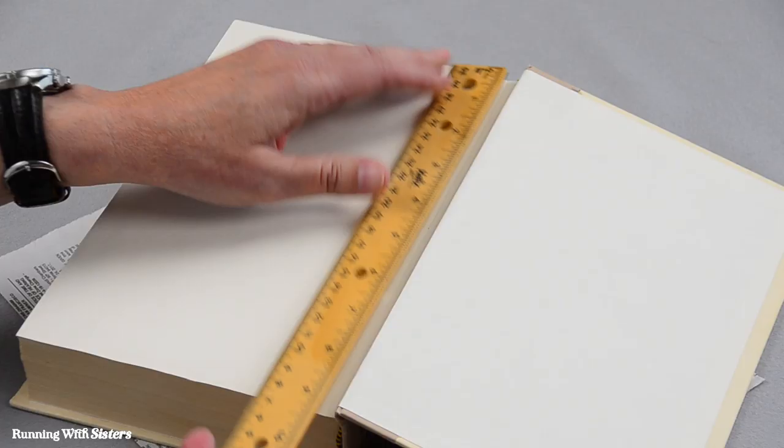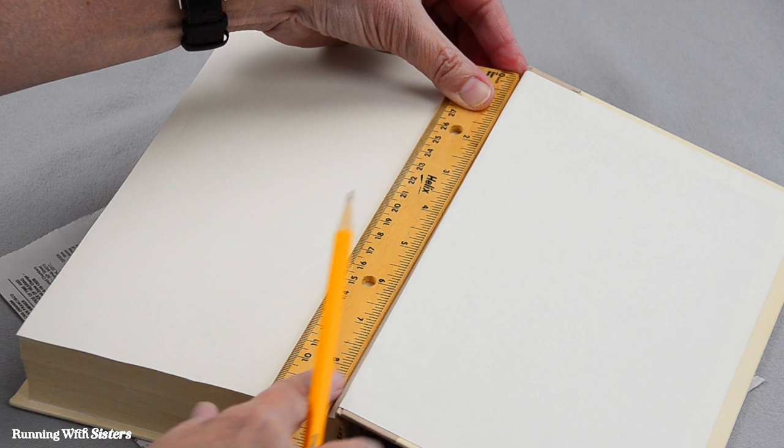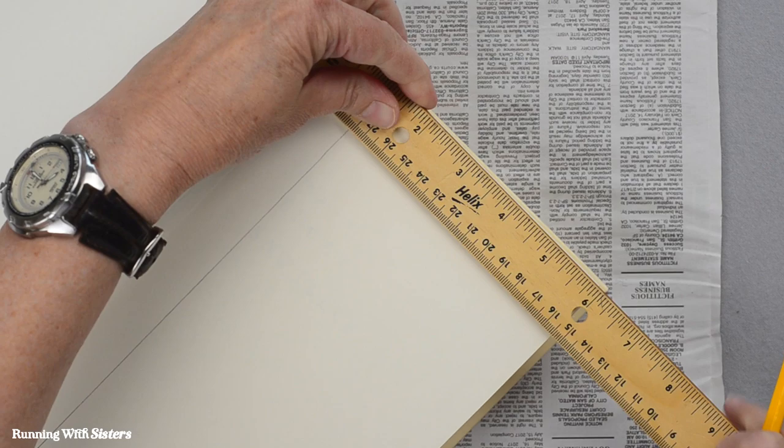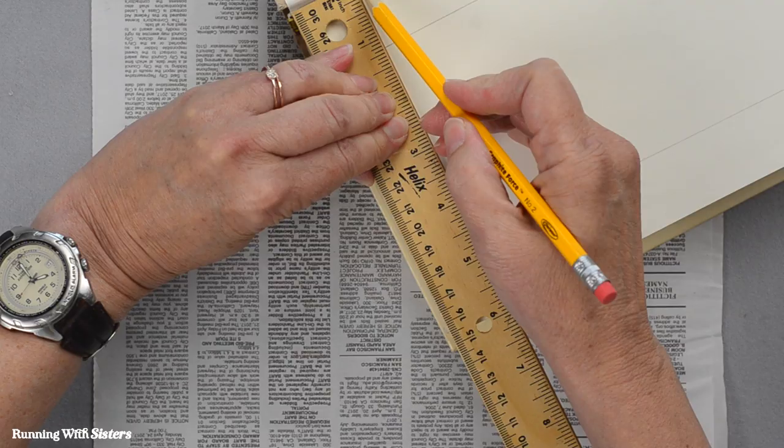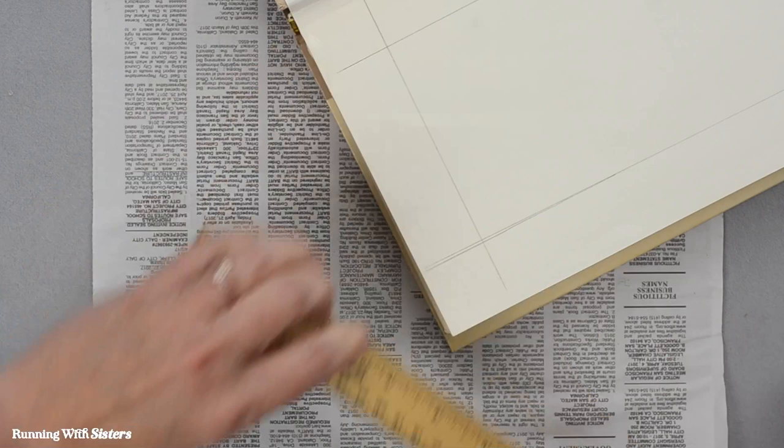This ruler is about an inch wide, so I'm just going to use it as my guide. I'm going to draw a line here and I'm just lining it up to the edge with my fingers. I'm going to draw in here and draw the last line.